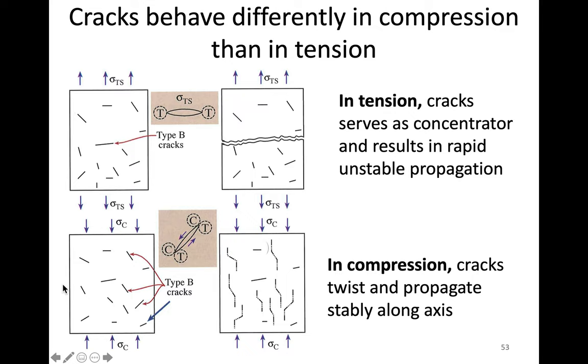This is the unstable way in which brittle materials shatter. However, the same material in compression—when we put a compressive force on it, you can see here these same cracks, but in a different orientation—has both modes of compression and tension. These cracks tend to twist and propagate much more controllably. They're able to link up and eventually break, but they propagate much more stably than in tension.